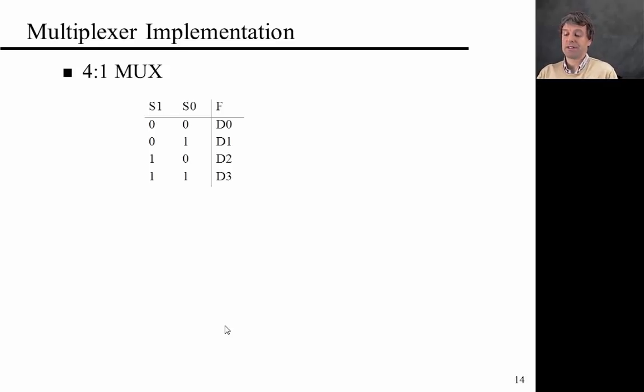That's the truth table. It's a bit unusual in the sense that what I'm drawing here is I'm saying that if S1 and S0, for example in the case where S1 and S0 are both 0, the output function is D0 so it's whatever data is coming in on the corresponding wire.